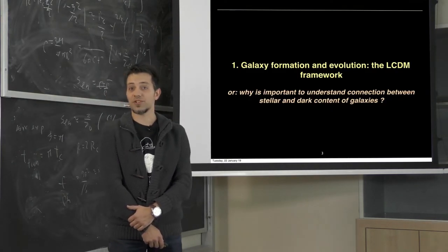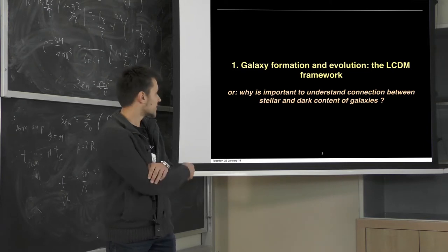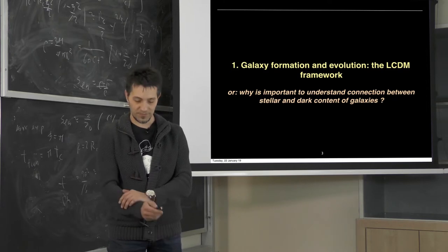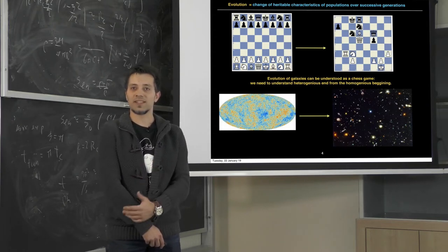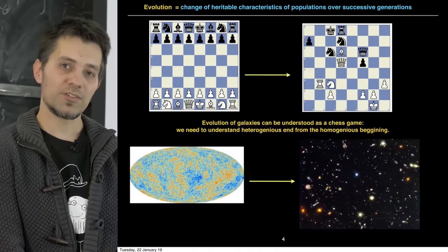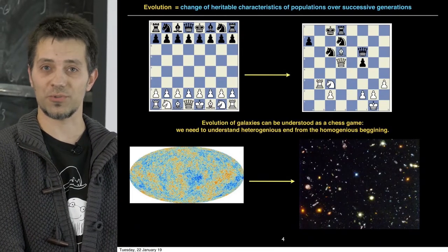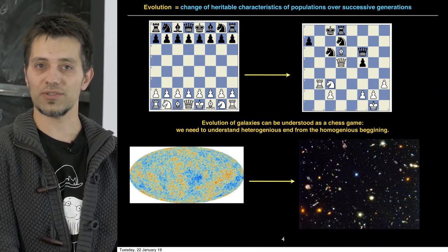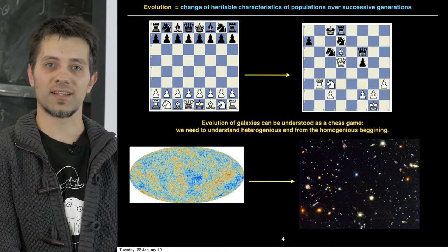When talking about galaxy formation and evolution within the Lambda CDM, we can ask ourselves: why is it important to understand the connection between dark matter halos and the baryons in the universe? To understand the evolution of galaxies, we can make a comparison to a chess game. A chess game starts from a homogeneous beginning and ends in a very heterogeneous way — much like the history of the universe. The connection between the beginning and the end is largely unknown.